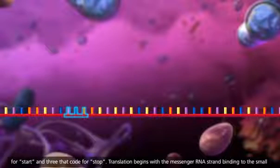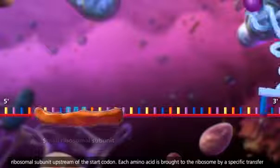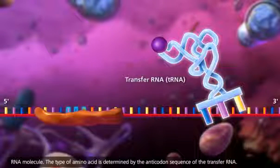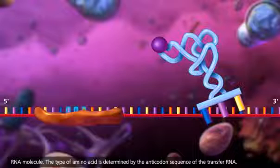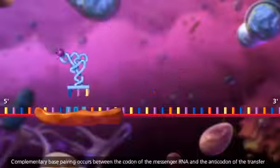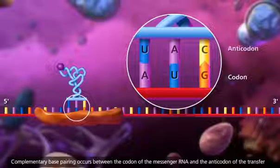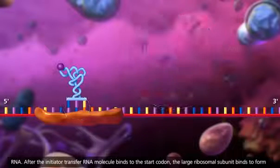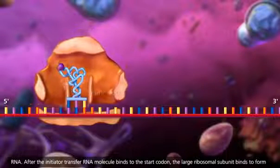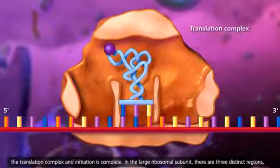Translation begins with the messenger RNA strand binding to the small ribosomal subunit upstream of the start codon. Each amino acid is brought to the ribosome by a specific transfer RNA molecule. The type of amino acid is determined by the anticodon sequence of the transfer RNA. Complementary base pairing occurs between the codon of the messenger RNA and the anticodon of the transfer RNA. After the initiator transfer RNA molecule binds to the start codon, the large ribosomal subunit binds to form the translation complex and initiation is complete.